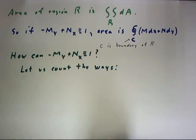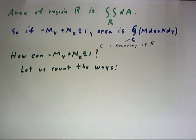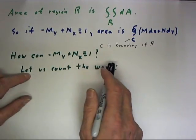The question then becomes, how can we get -M_y + N_x identically equal to 1? The answer is that there are lots of ways. I say let us count the ways.